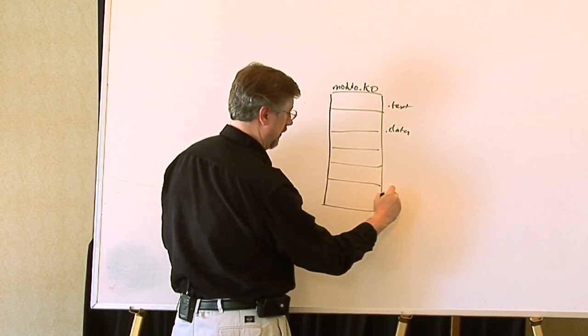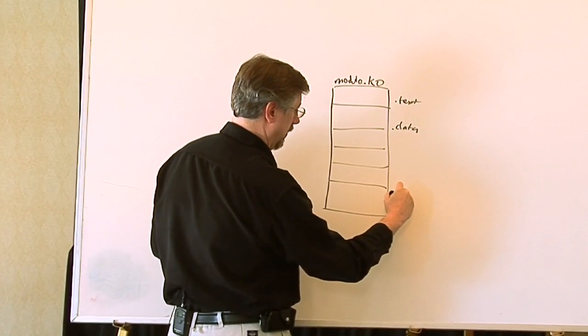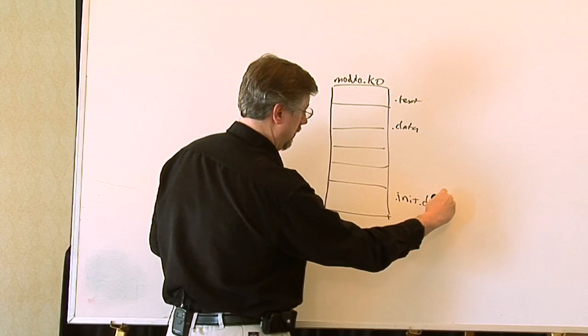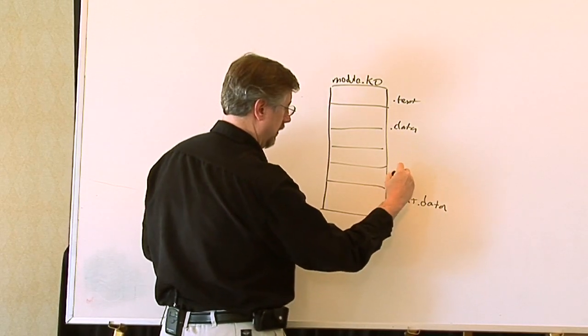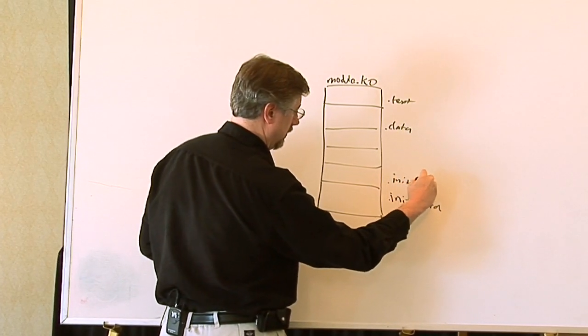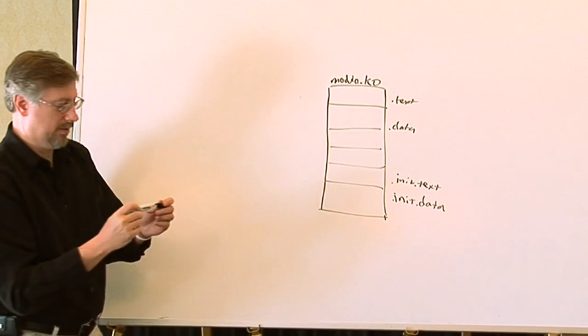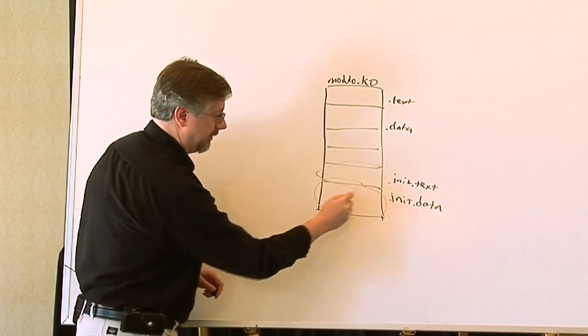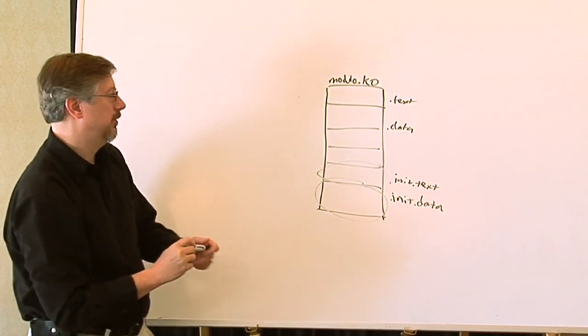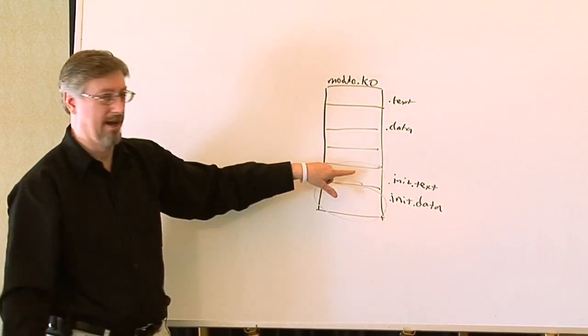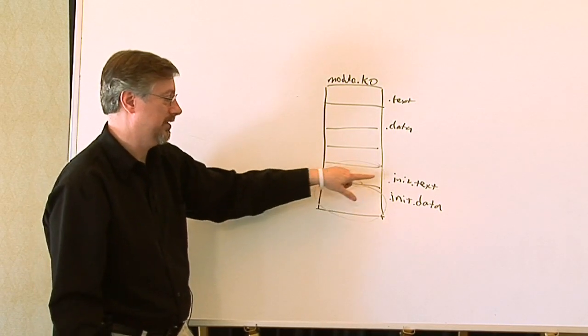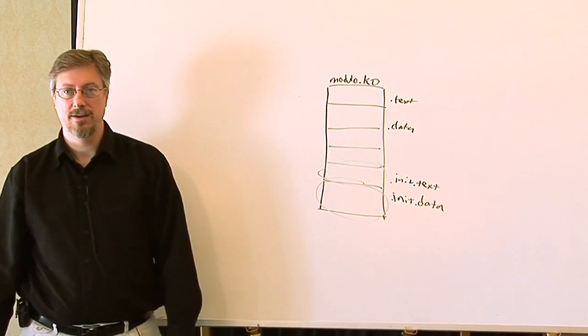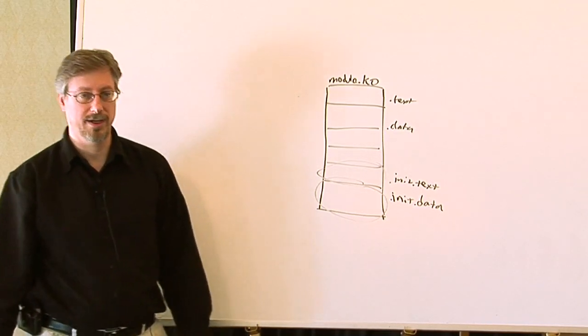And then you'll have a section called .init data or .init text. And so when it loads the module, it'll load these sections up here in their own space in memory. And when the initialization process is totally done, then it actually can discard the memory that it allocated for these sections. And that's how it can keep these initialization sections separate and can keep track of where they are loaded in memory.